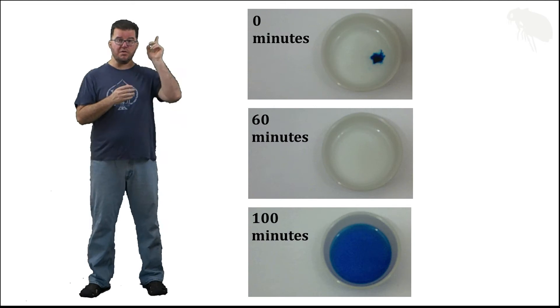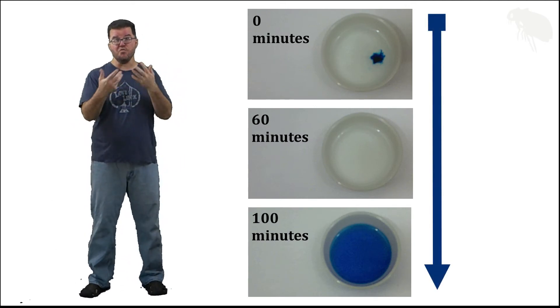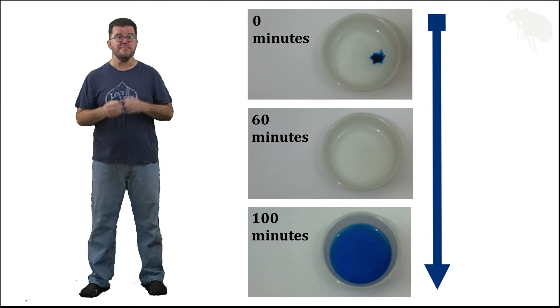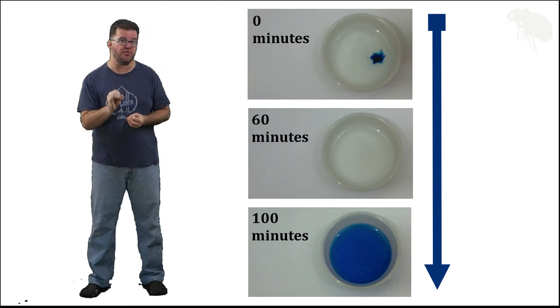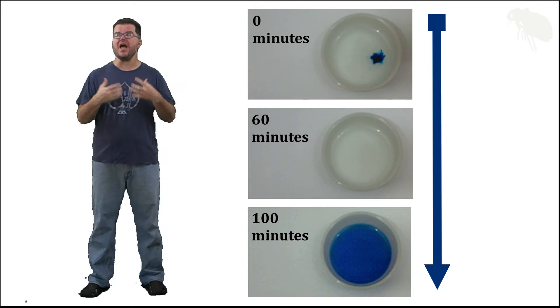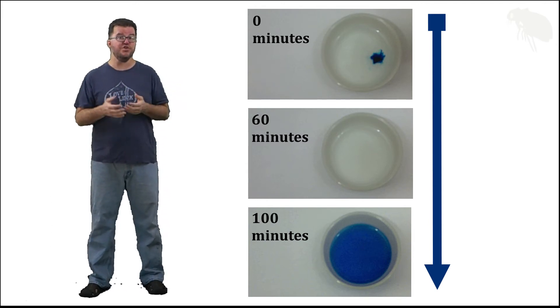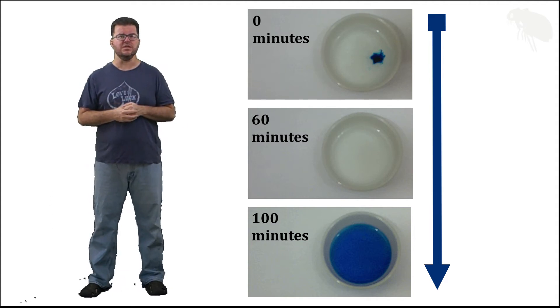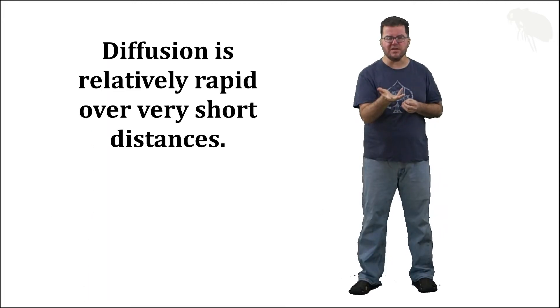Now notice from the first to the third of these three frames, we're definitely getting more and more uniformly distributed, but it took an hour and 40 minutes to get there. That's one drop of food coloring in a quarter cup of water. We're not talking about a lot of substance in this case, and yet it took an hour and 40 minutes to reach a point that we might call equilibrium. That's not going to be efficient for living organisms if that's how things have to work at that scale. The thing is, diffusion will rapidly achieve equilibria at very short distances.